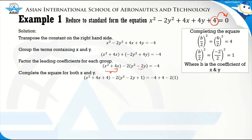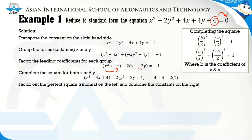Whatever is added to the left-hand side must also be added to the right-hand side. So on the right we have negative 4 plus 4, from the x group, and minus 2 times 1 from the y group. We then factor the perfect square trinomials: (x plus 2)² minus 2(y minus 1)². On the right-hand side, negative 4 plus 4 cancels, leaving negative 2.